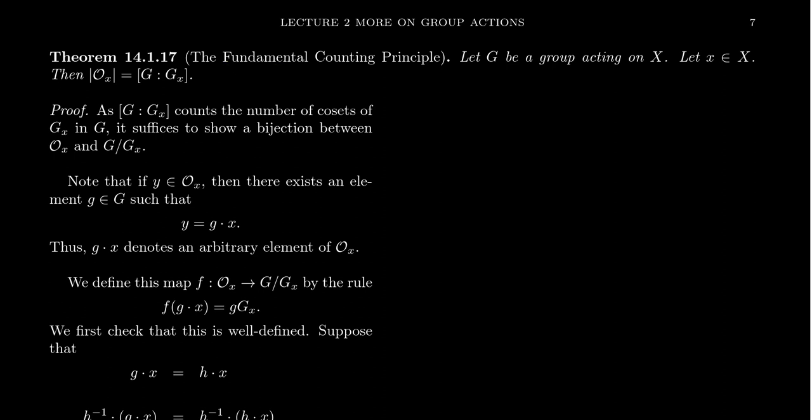So imagine we have a group that's acting on a set X. If you take an element x inside of the set X, then the following statement is true: the cardinality of the orbit of x is equal to the index of the stabilizer of x inside of group G.